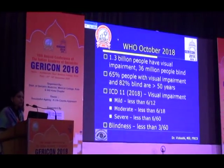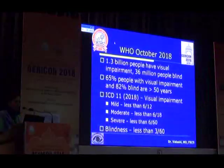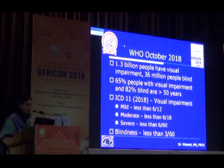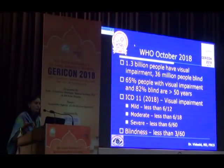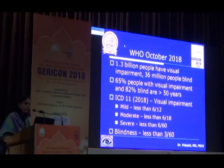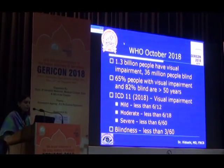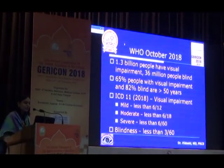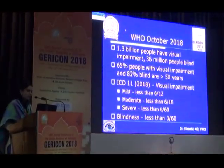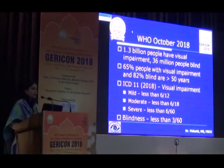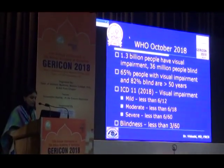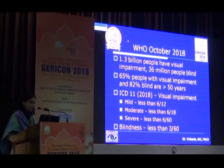This is the latest WHO October 2018 data. 1.3 billion people out of a total population of 7.7 billion have some sort of visual impairment in the world, and 36 million people are actually blind. And most of them are people who are above the age of 50 years, so this is very important for the elderly population.